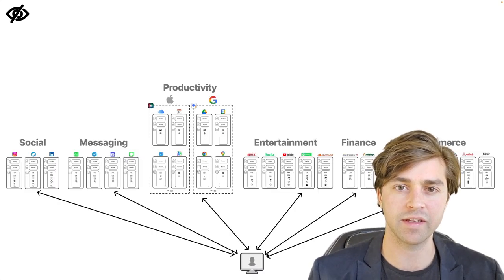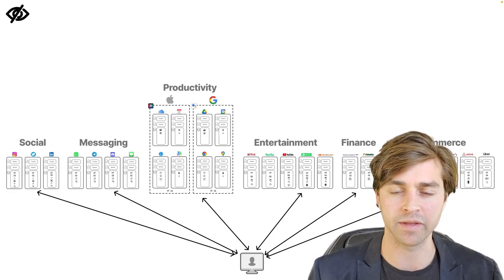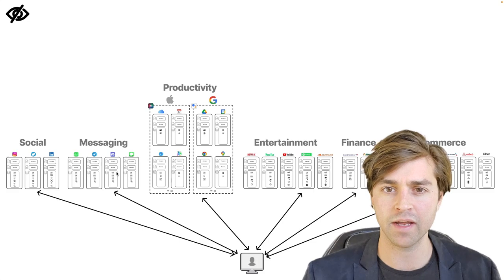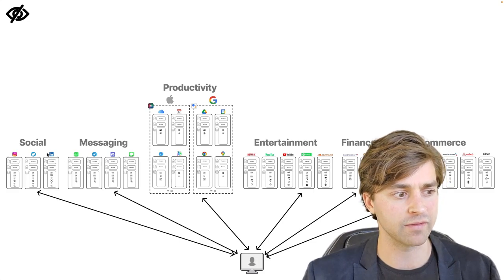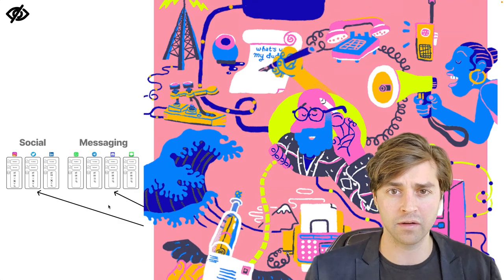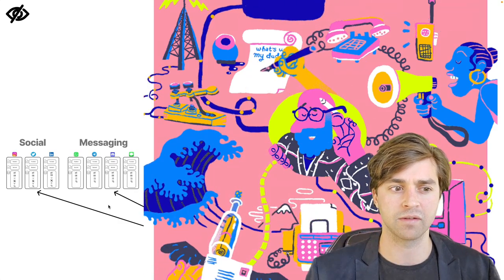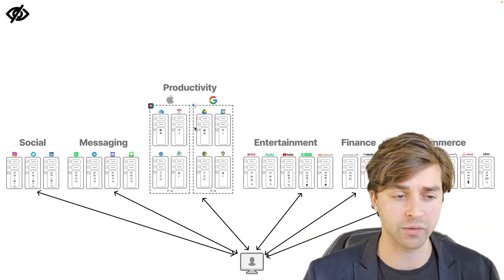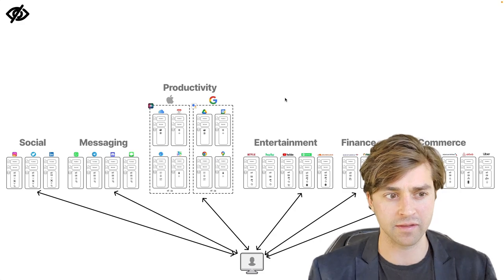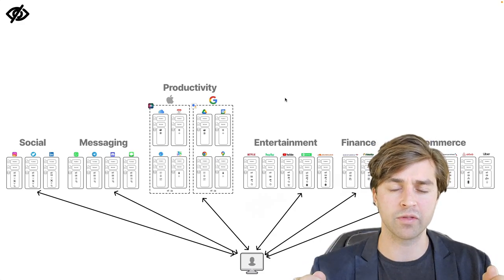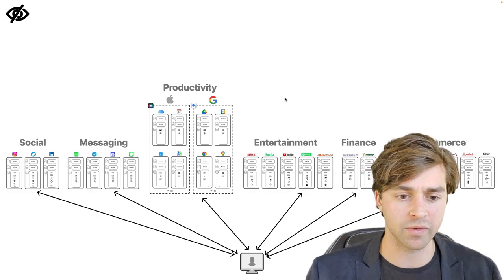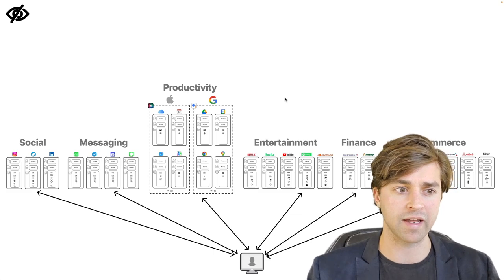Web2 pervades the entire application ecosystem — it's not just social media applications that suffer from these problems of lack of interoperability and permissioned access. I have four dedicated messaging applications and inboxes in three social media applications, meaning seven total inboxes with different contacts in each. In terms of productivity apps, I use two different cloud storage solutions, two different calendar apps, two different internet browsers, and different map applications in the Apple and Google ecosystems. Apple and Google are competitive with one another and data cannot sync between these productivity apps.